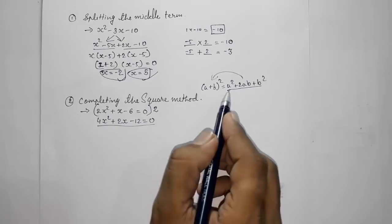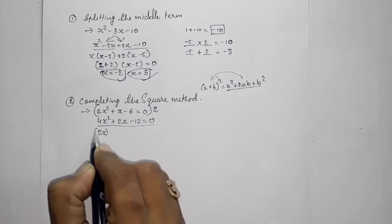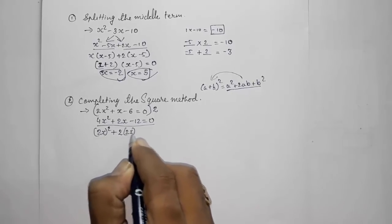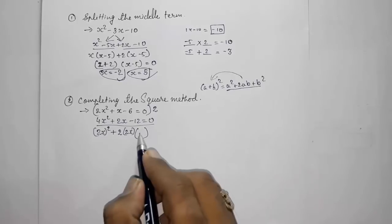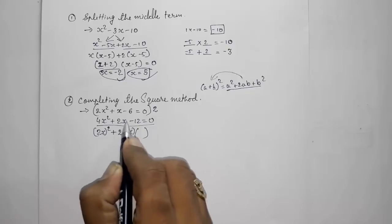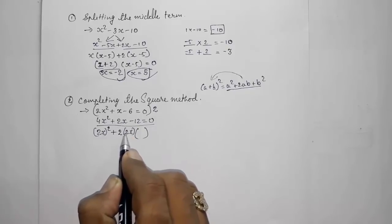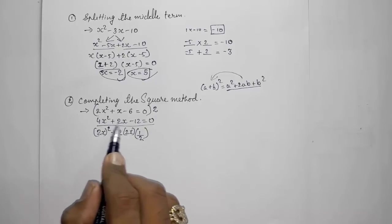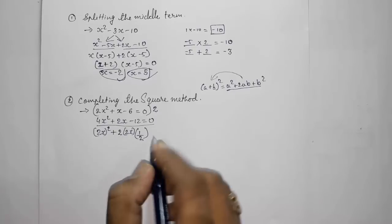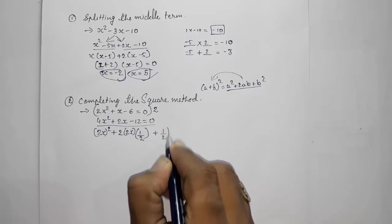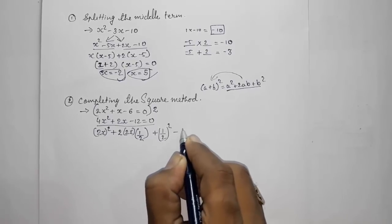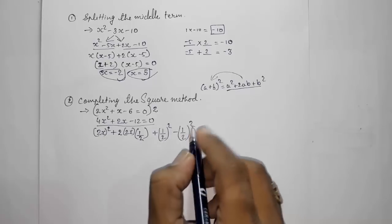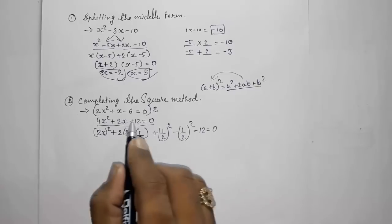We write 4x² as (2x)², so a = 2x. For the 2ab term, we need 2 × (2x) × b = 2x, which means b = 1/2. We add and subtract (1/2)² to balance the equation, keeping it equal to −12 and 0.